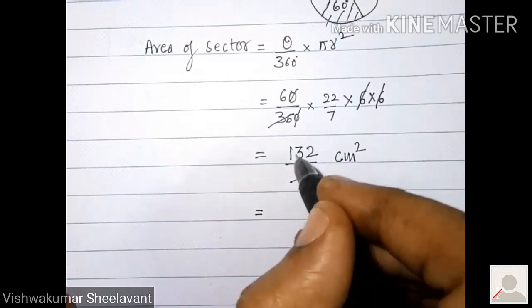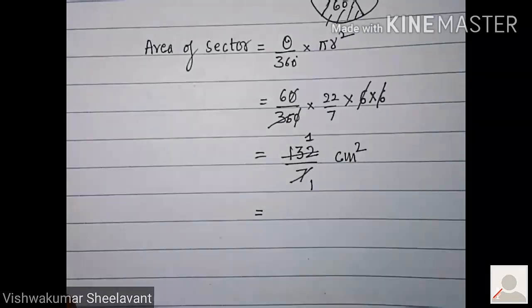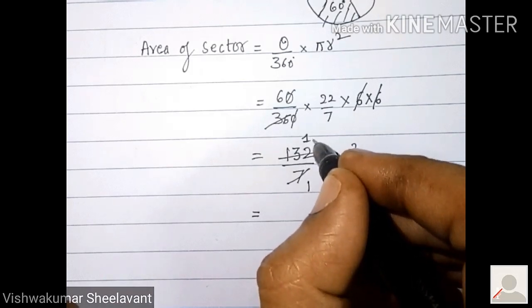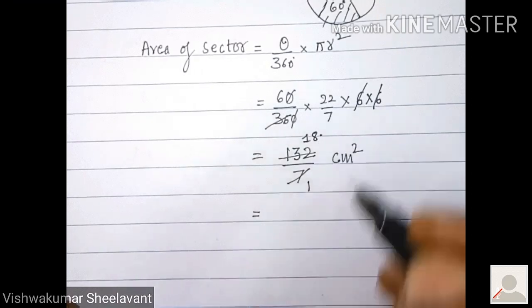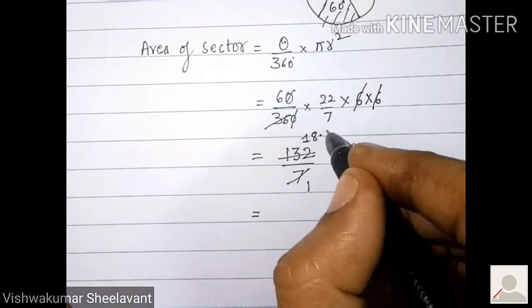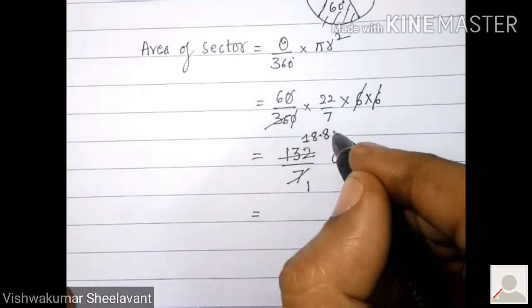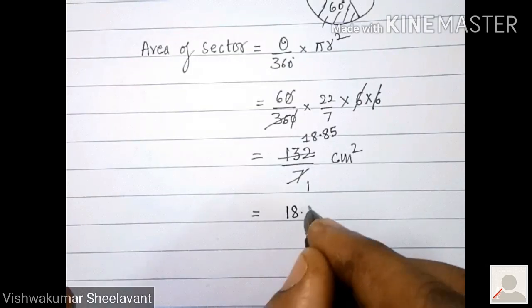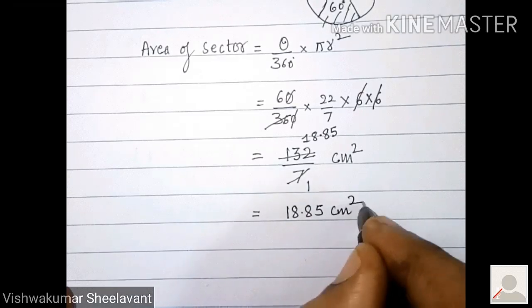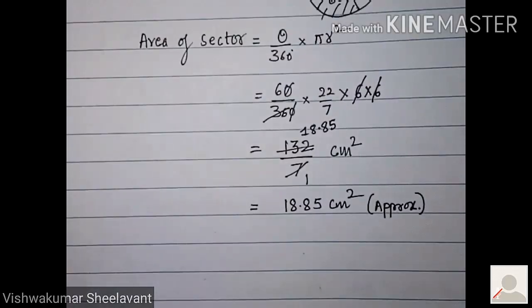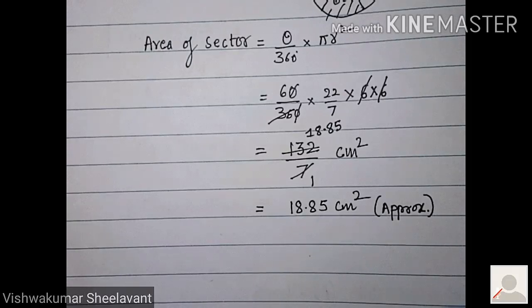6 into 7 one time, 6 will remain, it will become 62. 7 eight times, 56. Point. 62 minus 56, 6. So 60. Again 8 times, 56, 4 will remain. Approximately 18.85 cm squared. It is not a very accurate answer, approximately.